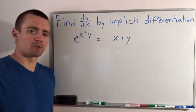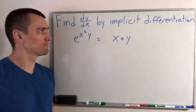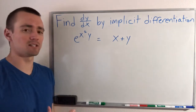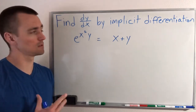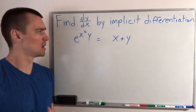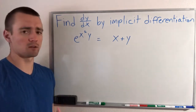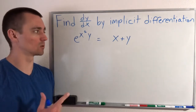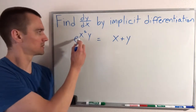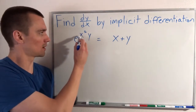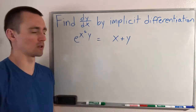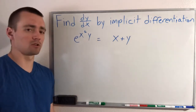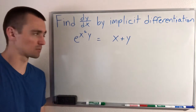Hey guys, Jake here, coming at you with some more math today. Here's the problem we're going to be doing today — finding dy/dx using implicit differentiation, given that we have e to the x squared y equals x plus y. Notice that x squared and y are all within this exponent here. Let's go ahead and jump into it and I'll show you the steps how to solve this problem.